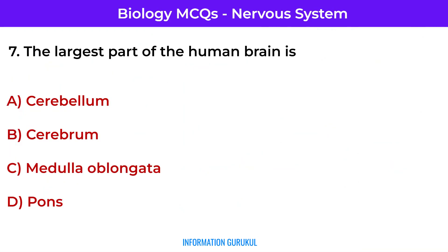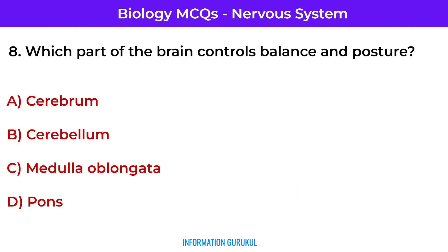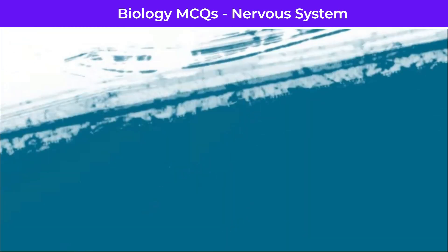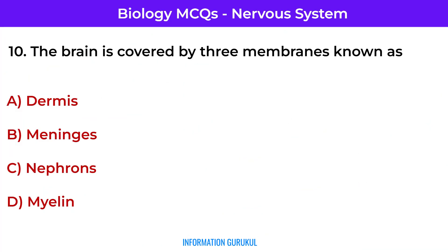The largest part of the human brain is the cerebrum. Which part of the brain controls balance and posture? Cerebellum. The part of the brain that controls involuntary actions like heartbeat and breathing is the medulla oblongata. The brain is covered by three membranes known as meninges.